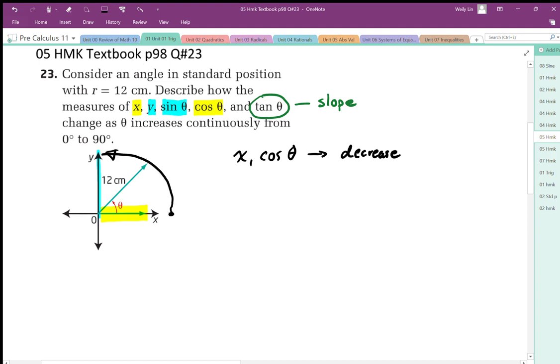So for y, which relates to the sine ratio and the y positioning, we're gonna go from 0 vertically all the way up to 12 as we go from 0 to 90 degrees. So it is increasing in that quadrant. And then for tan, as we increase that angle...